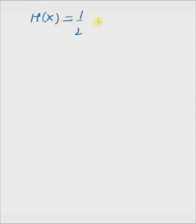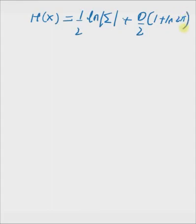Hello, welcome. In this short video, I will derive the expression for entropy of a multivariate normal distribution. The expression is given by h of x equals 1 by 2 logarithm of the determinant of the covariance matrix plus d by 2 times 1 plus logarithm of 2 pi, where d is the number of variables in the multivariate distribution — that is, the length of the vector x.